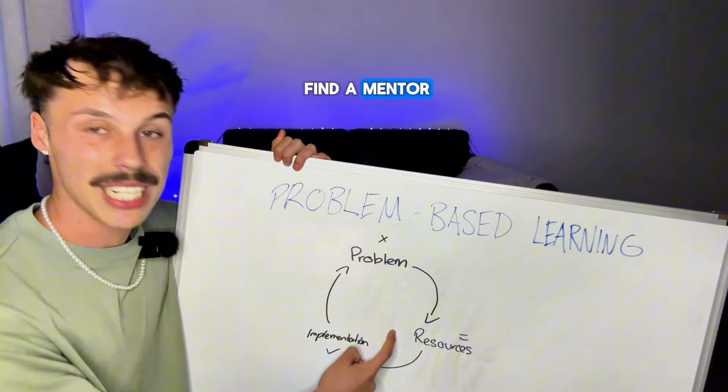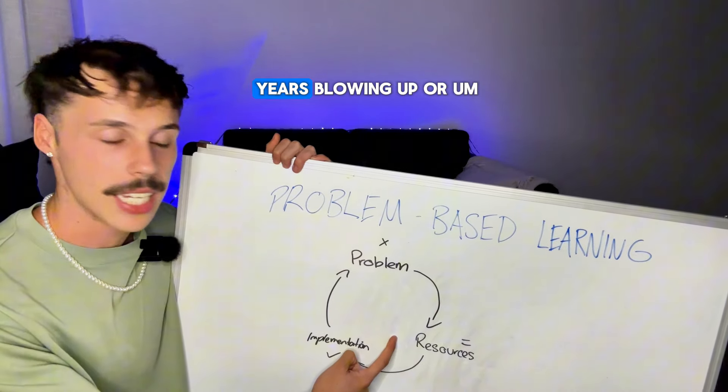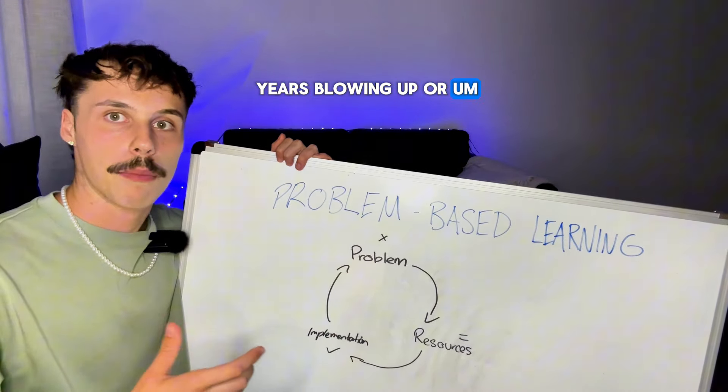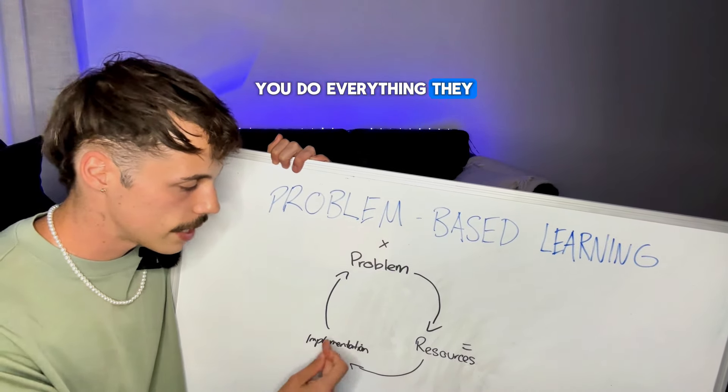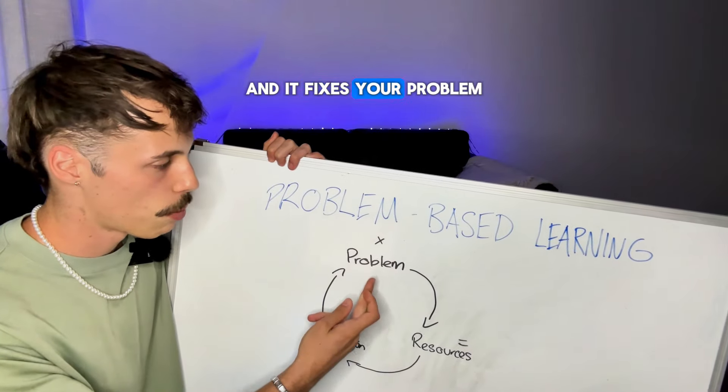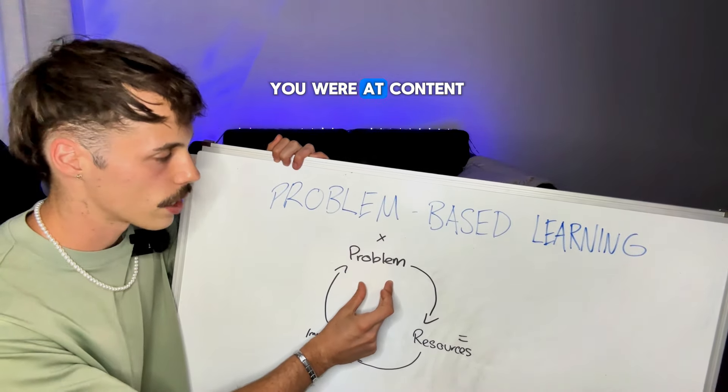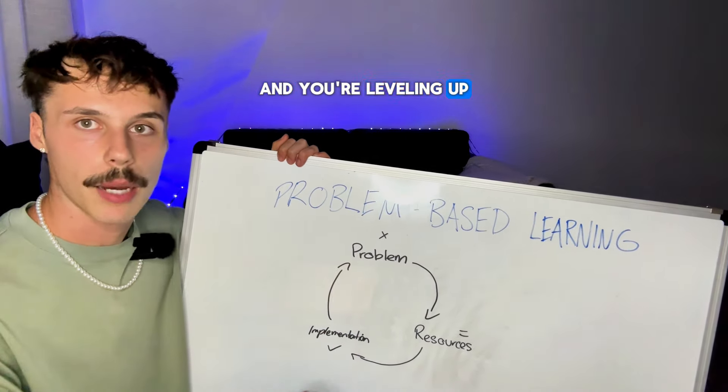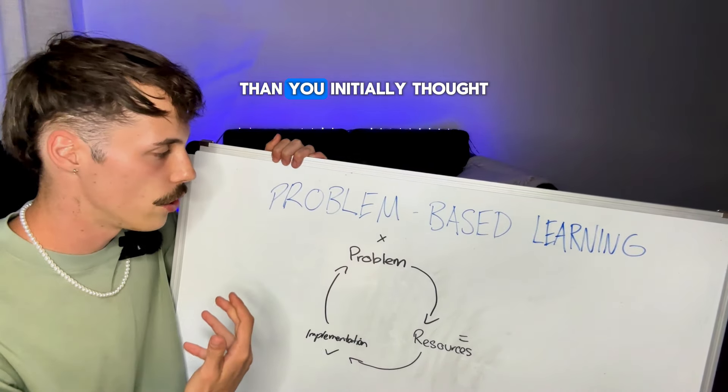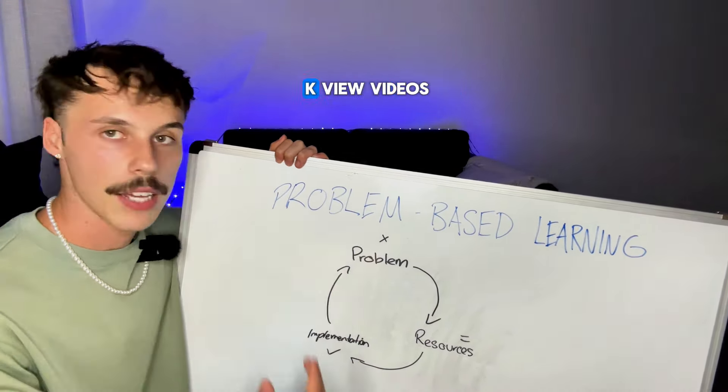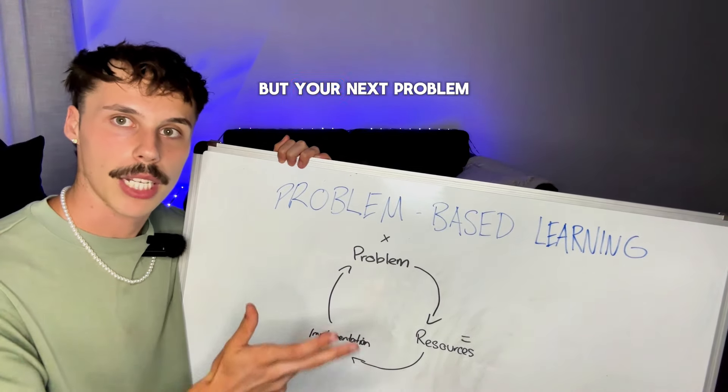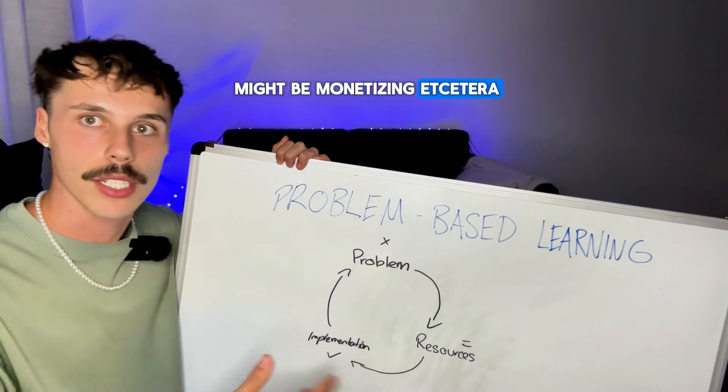And they just go find a mentor, maybe, who's had 12 years blowing up or growing their social media account. You pay them for an hour-long session. You do everything they tell you to do and it fixes your problem. You're way better than you were at content and you're leveling up. You're getting way more views than you initially thought you would. So you're getting 12K, 100K view videos. It worked. But your next problem might be monetizing it, et cetera.